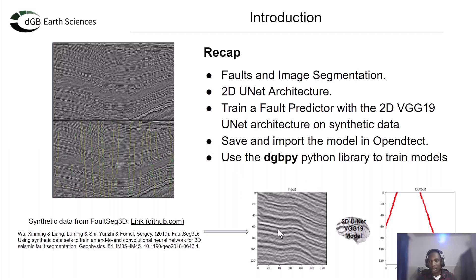We predict the class each pixel belongs to — either fault or not fault. You can see this example here: this is a seismic image showing image segmentation where each pixel the model tries to predict. The white background represents non-fault classes, while the red lines are the pixels classified as fault classes.